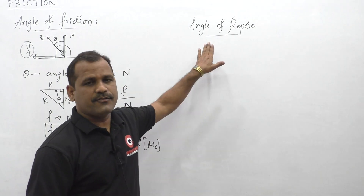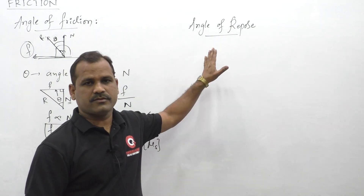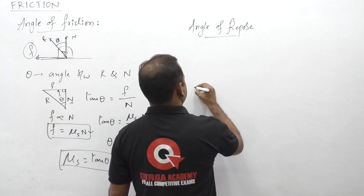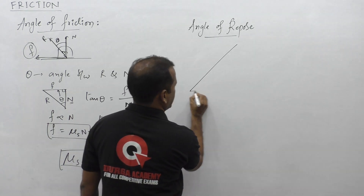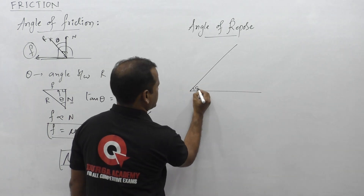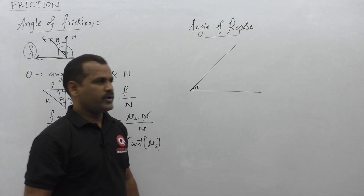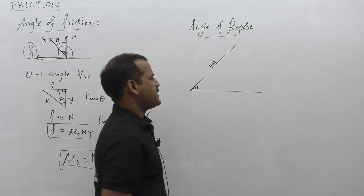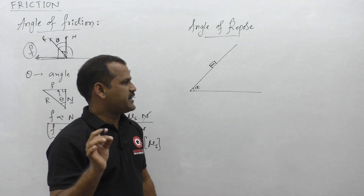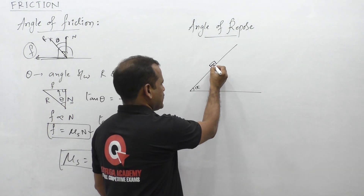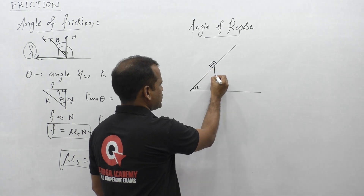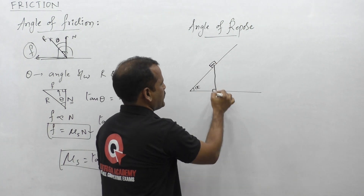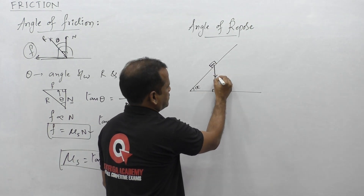Now let us consider the angle of repose. This is the case we consider for the inclined plane. Assume that a plane is inclined at angle alpha with the horizontal. We are keeping an object of mass m on this inclined plane. Generally the weight of the object acts always downwards, perpendicular to this plane, that is mg.